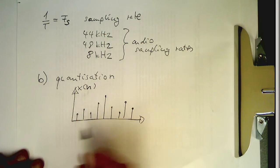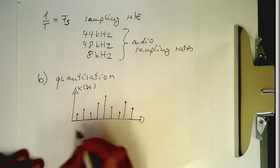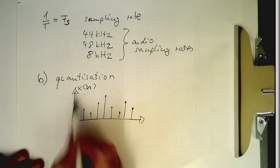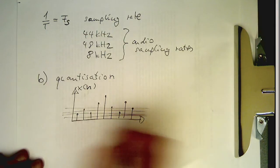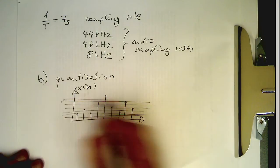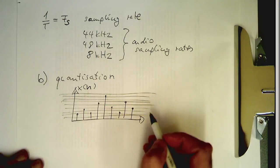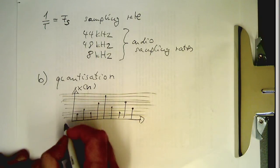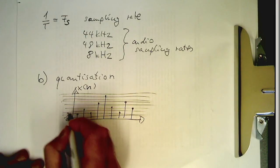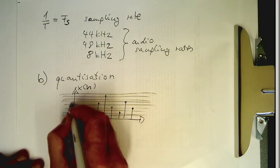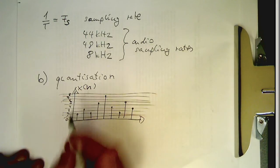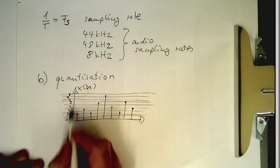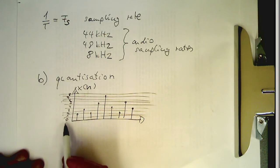So now we have these discrete samples here, but still the y-axis here is still continuous. So now we divide this in different levels here like that. And then we give every level an index number: two, three, four, five, six, seven, eight and so on. And obviously the finer this division, the higher the precision is.